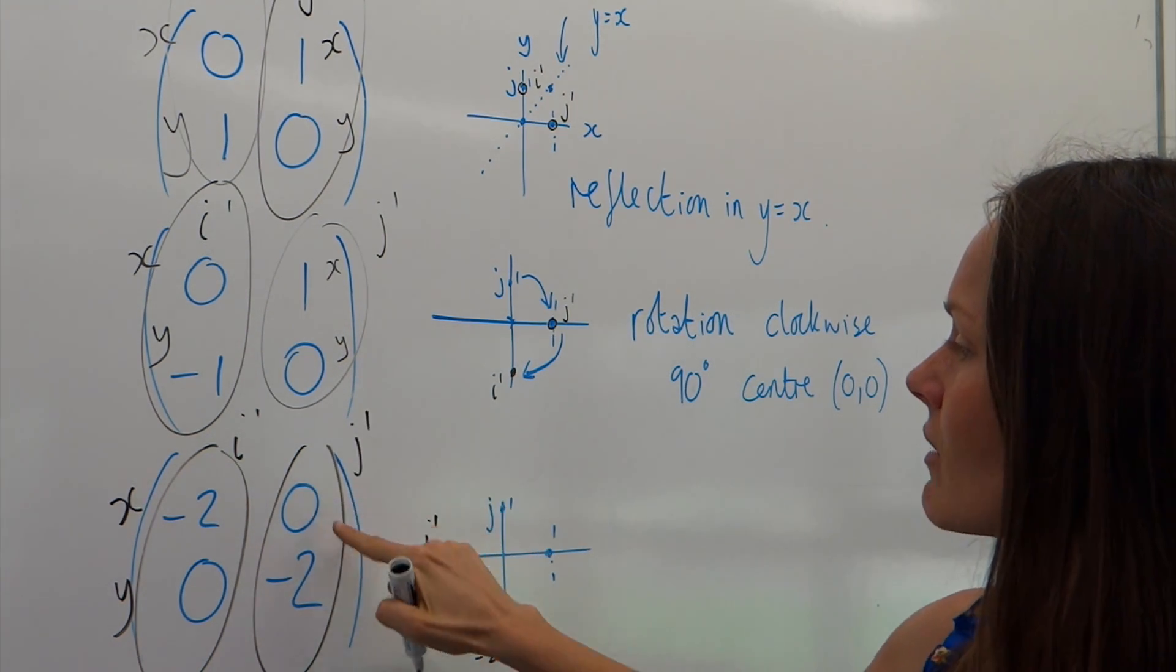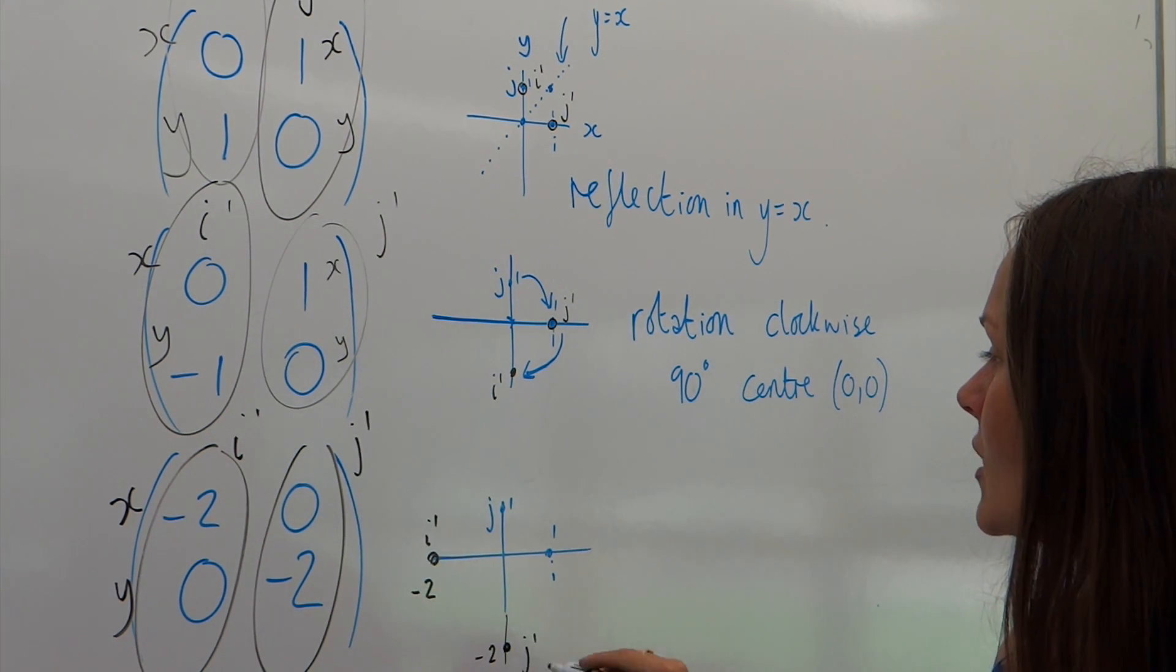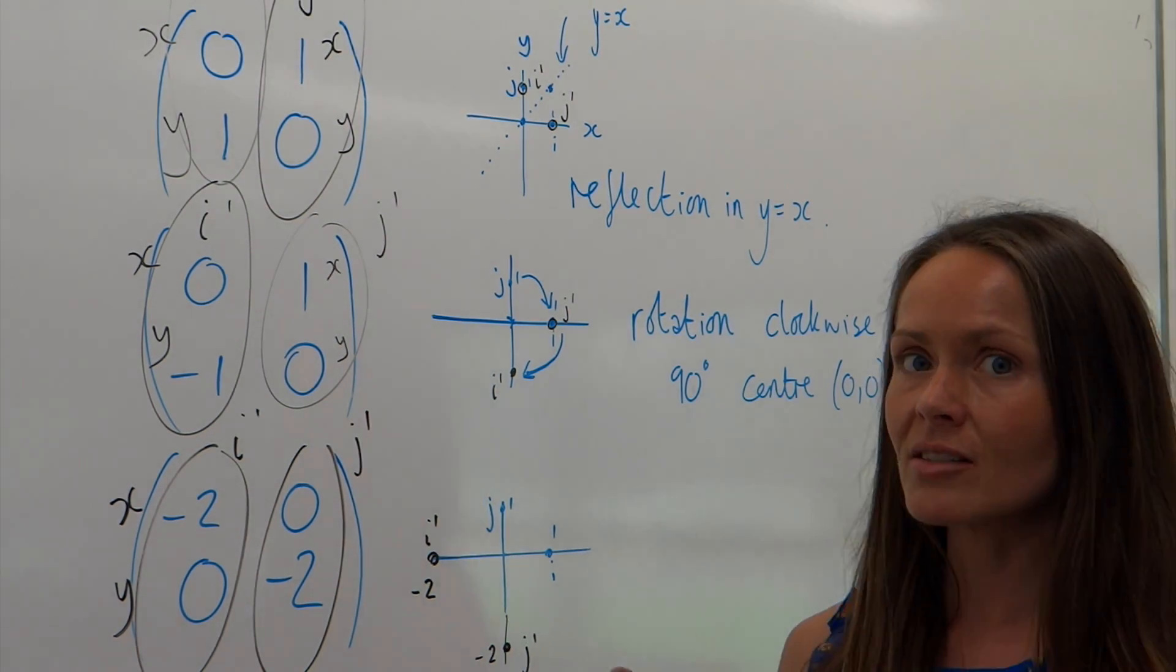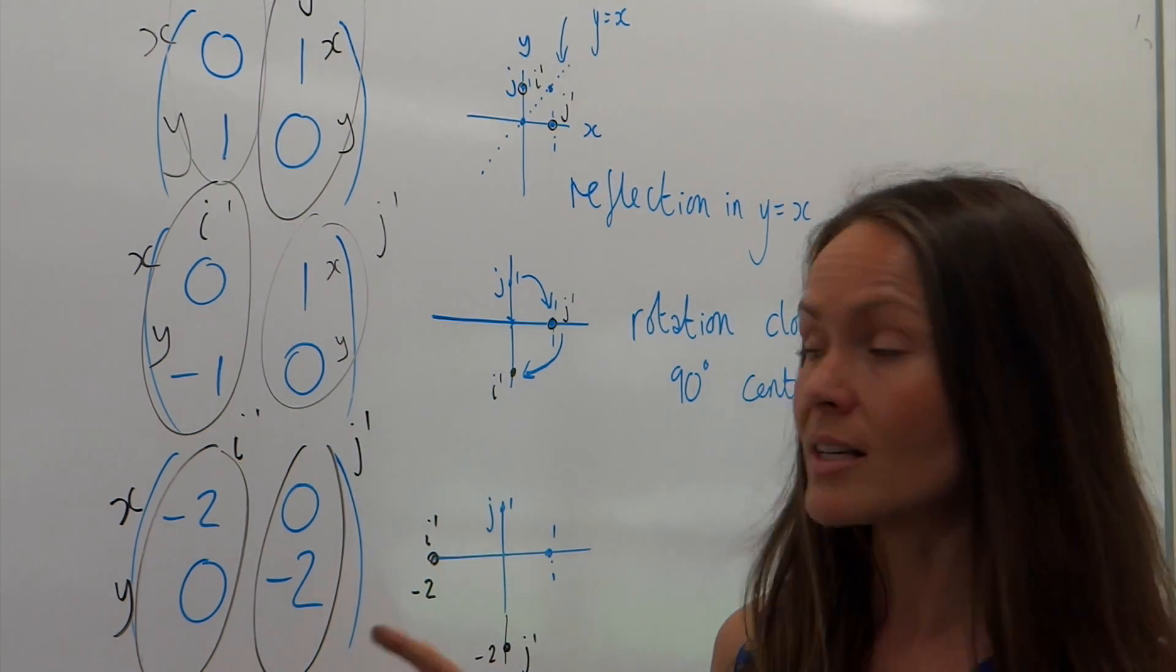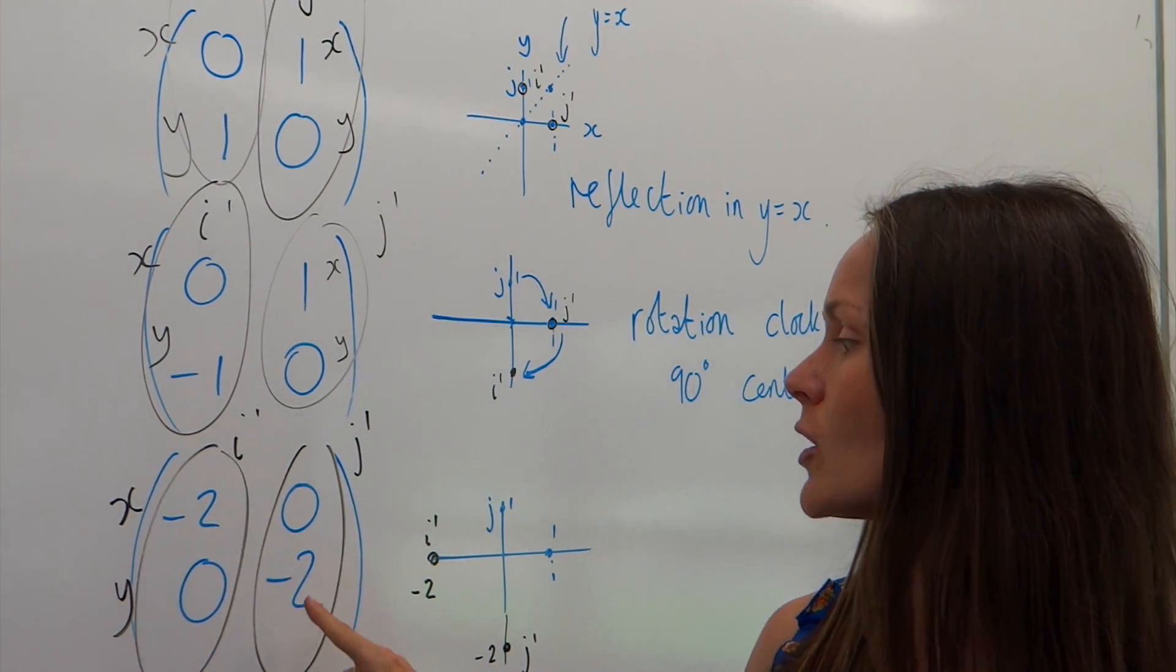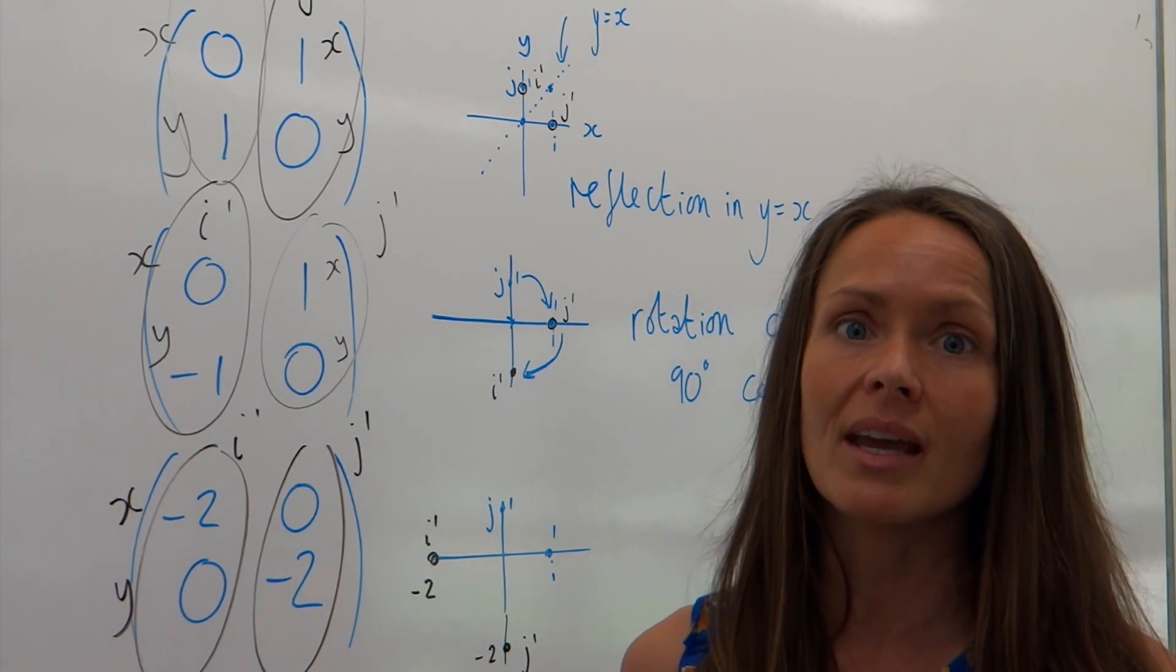So, x is zero, y is minus two. So, there's j dash, and there's i dash. So, the distance has changed in this one. We're not dealing with ones and negative ones anymore. We've got a different number.